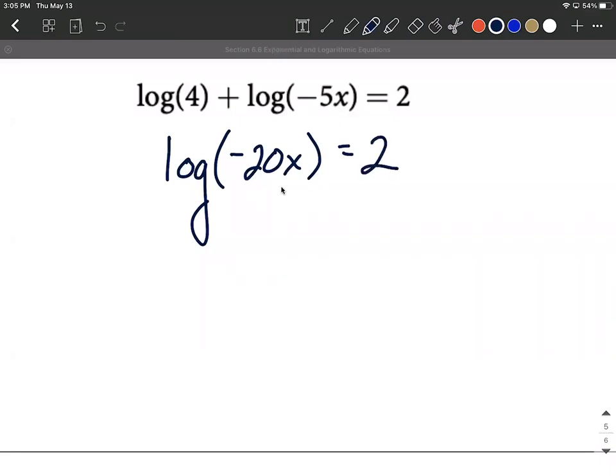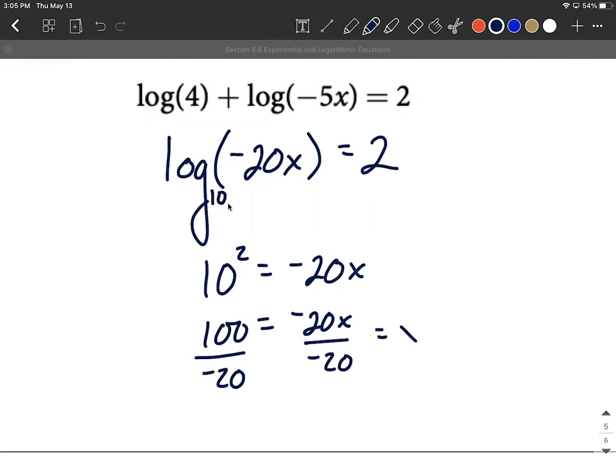So we've isolated, we've got a single logarithm on the left hand side equals some number. We want to switch forms, go over to exponential form using the definition of logarithm. Hopefully remember if you don't see a base indicated, it's a common logarithm, that's automatically log base 10. That's going to be really helpful to know about. So in exponential form this would be 10 to the second power equals negative 20x. 10 to the second power, 10 squared, is equal to 100. Now to get x all by itself we'll divide both sides by negative 20. This will put x on the right hand side all by itself, and we'll end up with negative 5 for our solution.